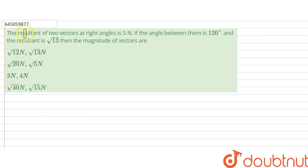The question says the resultant of two vectors at right angles is 5 Newton. If the angle between them is 120 degrees and the resultant is root 13, then the magnitude of vectors are what?